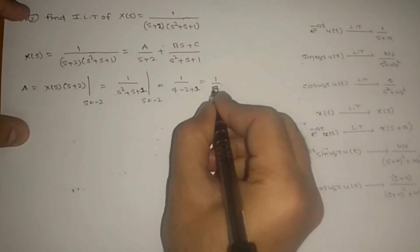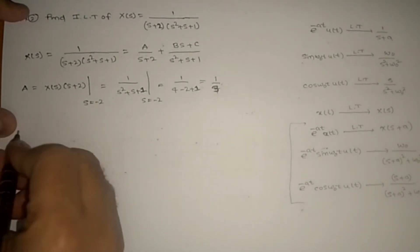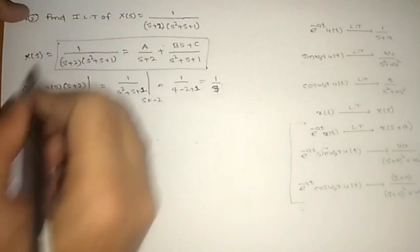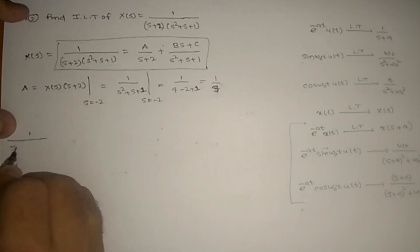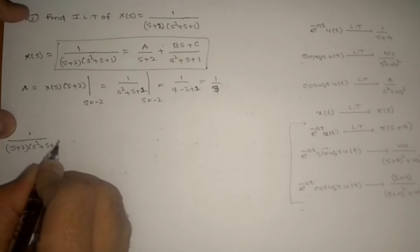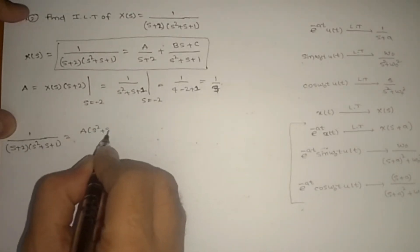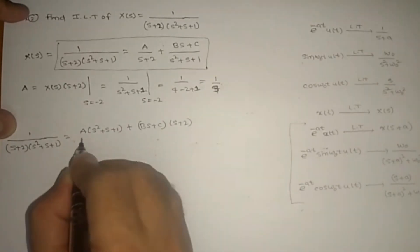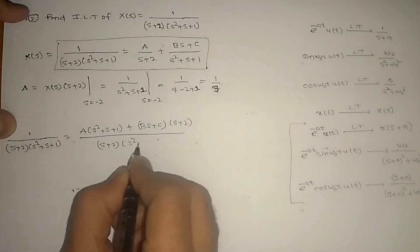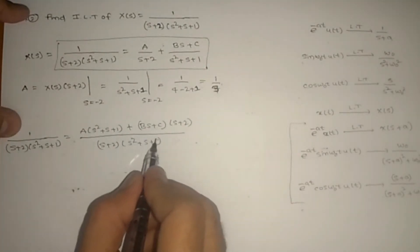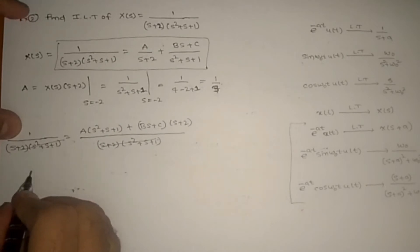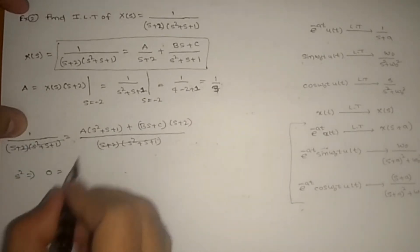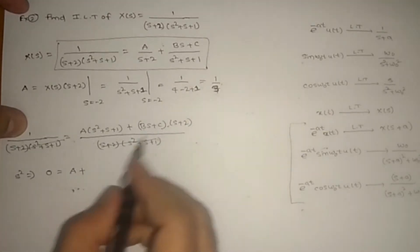So we have A = 1/3 for the 1/(s+2) term. Next, B and C will be found by the comparing method. Writing 1 = A(s²+s+1) + (Bs+C)(s+2) by taking LCM, then cancelling the denominator. Comparing s² terms: 0 = A + B, so B = −1/3.